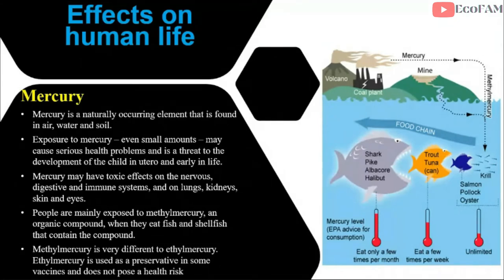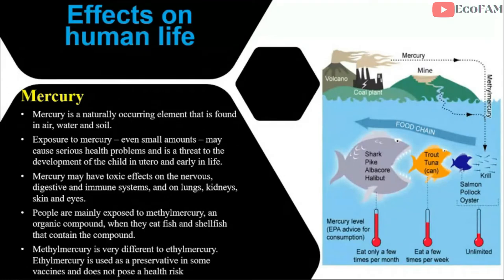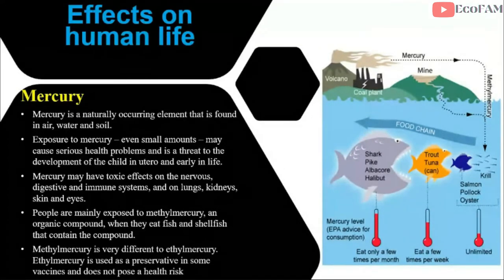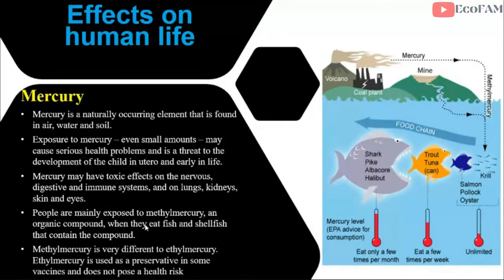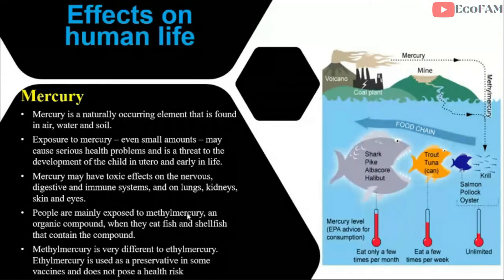Mercury becomes very dangerous when it is converted to methyl mercury — that is, when mercury reacts with a methyl group. This compound is very dangerous for humans and can cause toxic effects on the nervous system, immune system, lungs, kidneys, skin, and eyes. Methyl mercury is an organic pollutant and gets easily absorbed into the fatty tissues of fish and other aquatic organisms in the food chain.